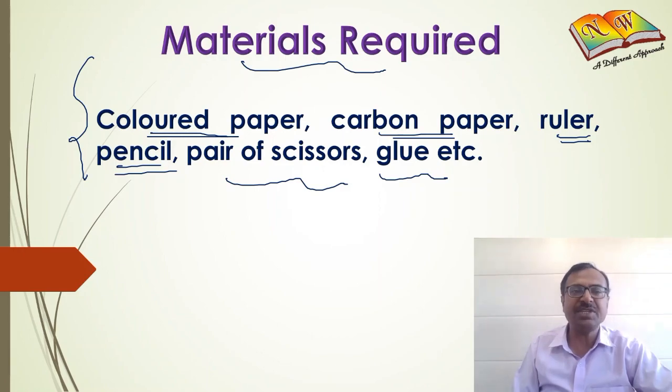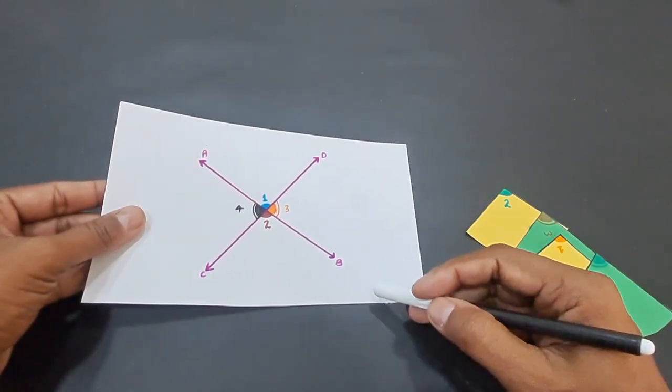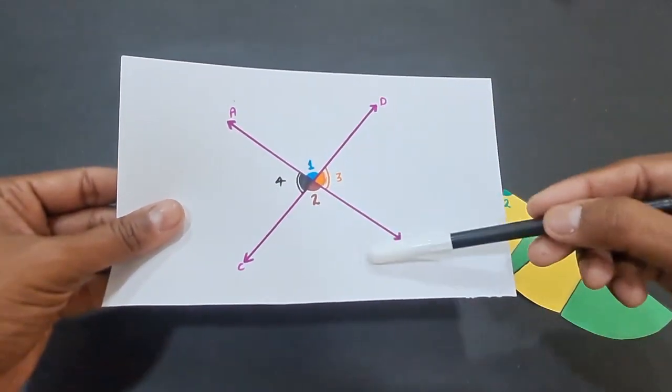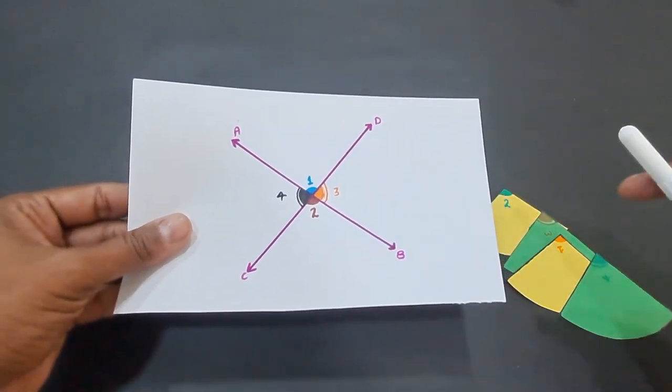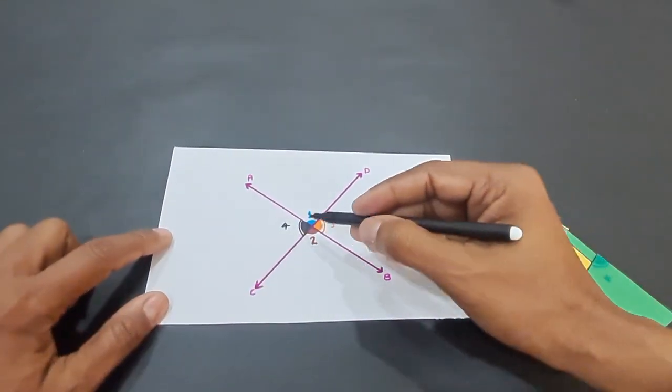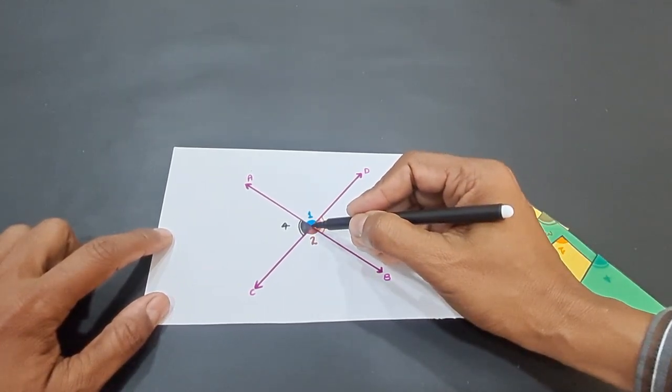Let's perform this activity now. For conducting this activity, you will have to draw two lines AB and CD which intersect at a point. When these two lines intersect, you will have four angles formed at the point of intersection.